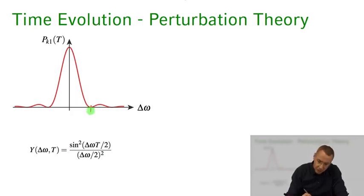There are actually zero crossings here at frequencies 2π over capital T, the pulse length detunings, and minus 2π over T. So only within this window from minus 2π over T to 2π over T is our transition probability significant. There are some side lobes, but the dominant amount of transition probability happens within that window.